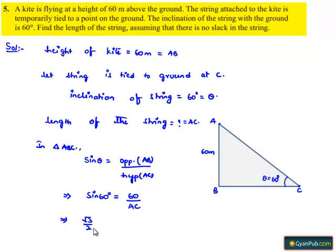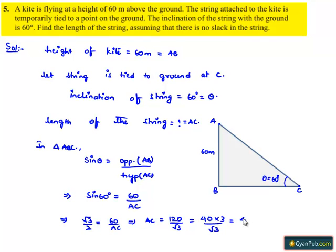This implies sine 60 degrees is equal to the opposite side, 60 meters, divided by the hypotenuse AC. That implies sine 60 is root 3 by 2, which equals 60 by AC. That implies AC is equal to 60 into 2, that is 120 divided by root 3, which equals 40 times root 3, that is 40 root 3. Therefore, the length of the string is 40 root 3 meters.